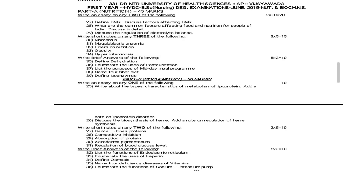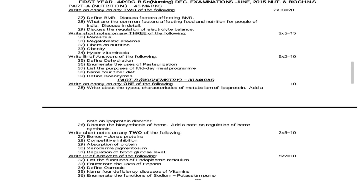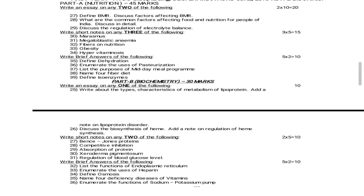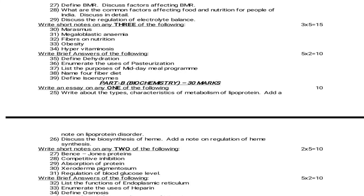Next is June 2015 question paper. Nutrition essay questions: Define BMR and discuss factors affecting BMR. What are the common factors affecting food and nutrition for people of India? Discuss in detail. Discuss the regulation of electrolyte balance. Short notes — 5 marks: Marasmus. Megaloblastic anemia. Fibers in nutrition. Obesity. Hypervitaminosis. 2 marks questions: Define dehydration. Enumerate the uses of pasteurization. What are the purposes of midday meal program? Name 4 fiber diets. Define isoenzyme.